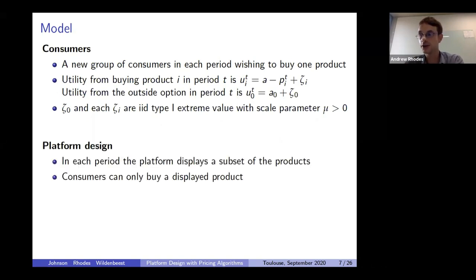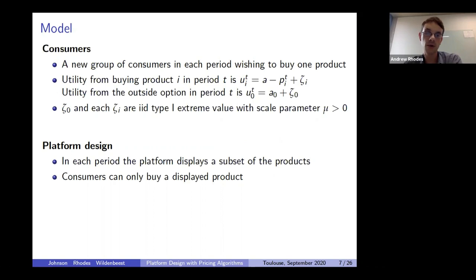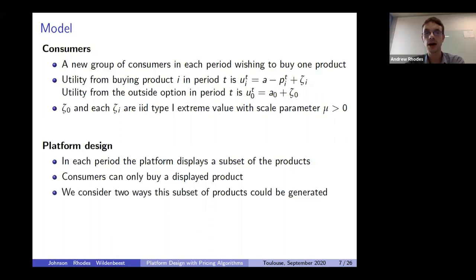We also have a platform. We focus on very simple design policies — in each period the platform will display a subset of products to consumers. In this stark theory model, the platform chooses some subset of products to show and consumers can only take the outside option or buy from that subset. When we move to experiments with algorithms, we allow for a much richer setup. I'll look at two simple ways in which this subset of products could be generated and examine the consequences for market outcomes.